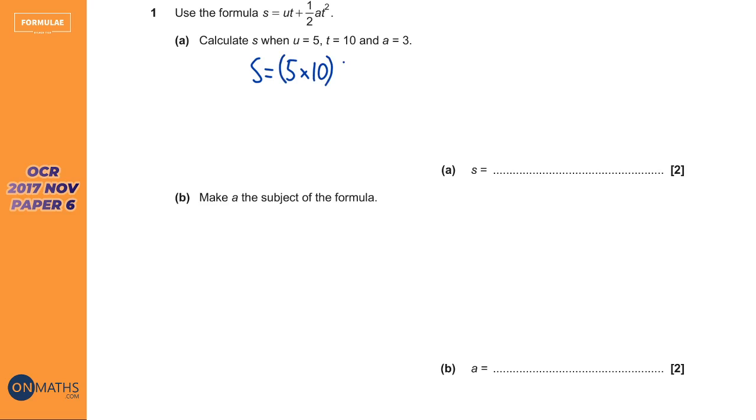I'm going to do 5 times 10 plus half times 3 times 10 squared. And so when you put that into the calculator, you get the answer of 200. Simple. Next, we need to rearrange it to make A the subject of the formula.